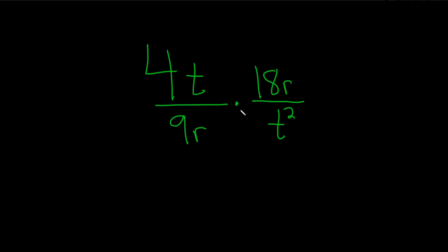In this problem, we have two fractions with all kinds of variables, two different variables. One of them is actually squared, and the question is to multiply.